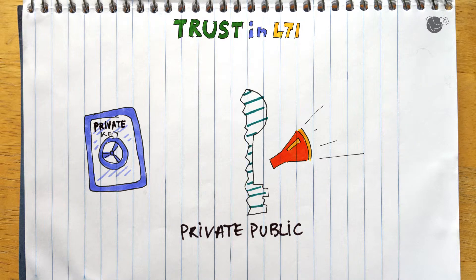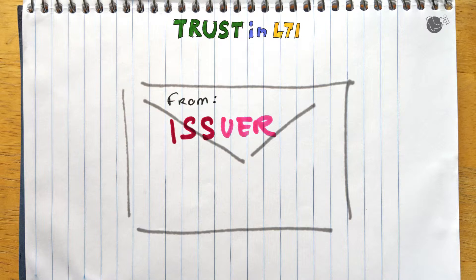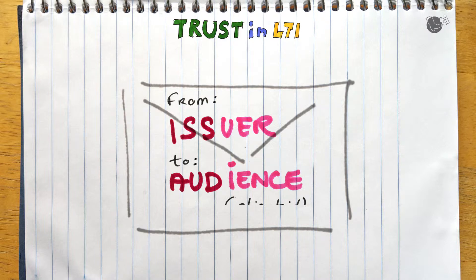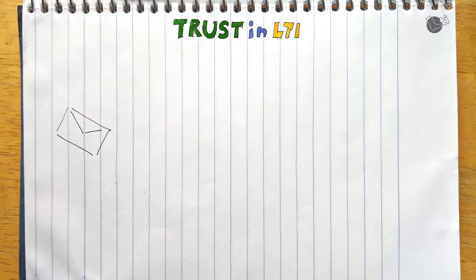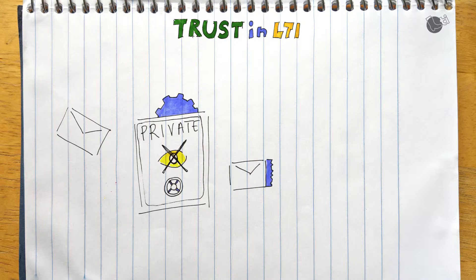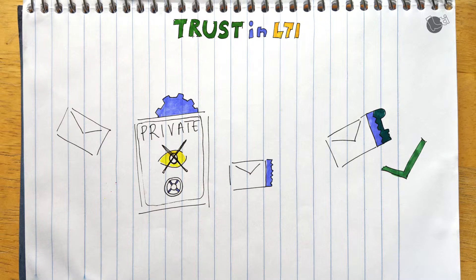In LTI, we use a key pair to assert who is the sender of the message — this is purely about signing, not encryption. The sender is called the issuer, often abbreviated as ISS in the payload, and the receiver is called the audience, abbreviated as AUD. When the message is sent, the sender uses its trust store to sign the message using its private key. The receiver then checks the recorded public key for that issuer and verifies that the message was properly signed, so it can be trusted.